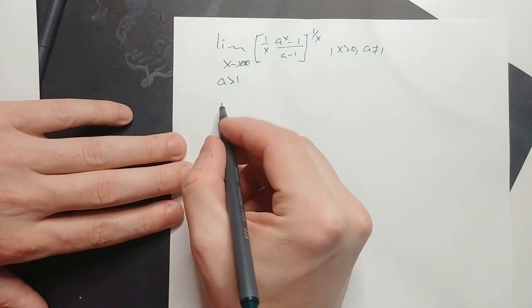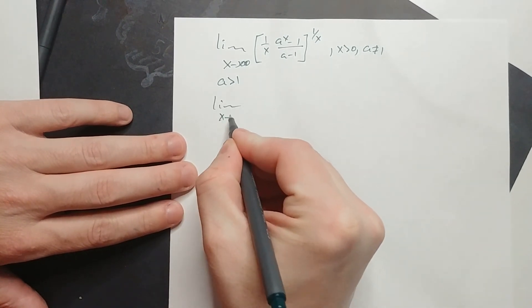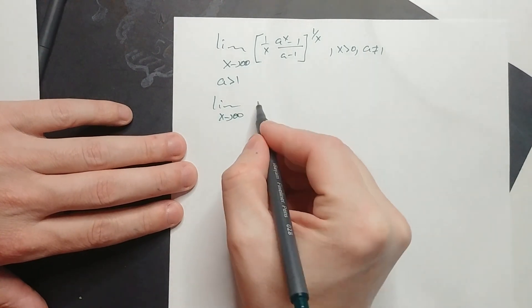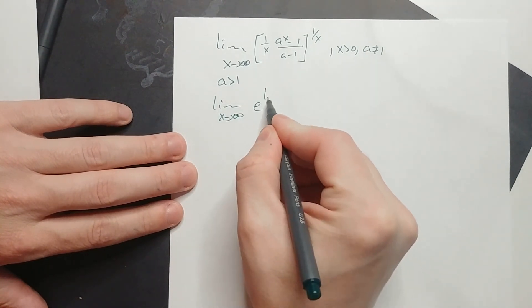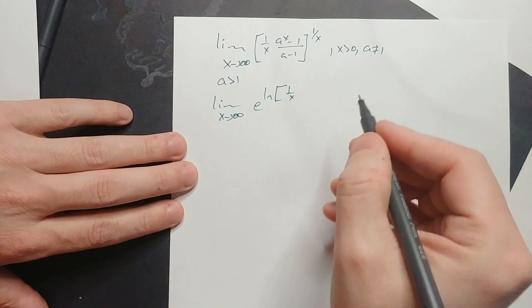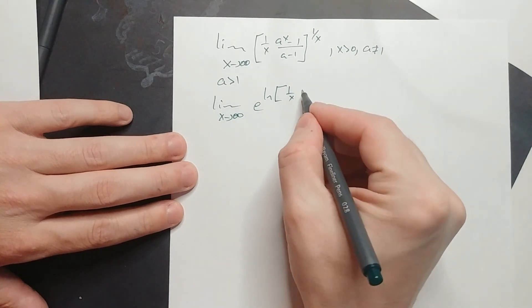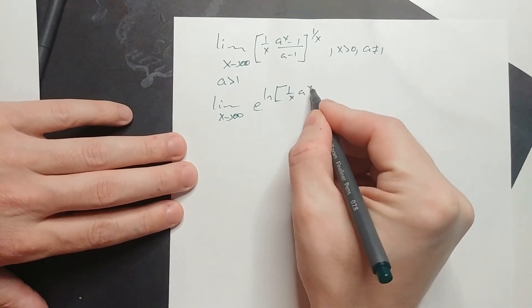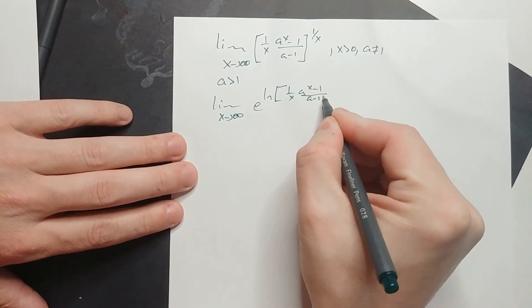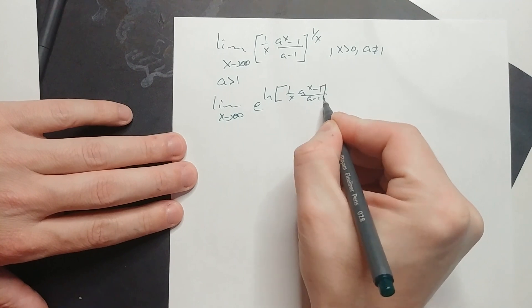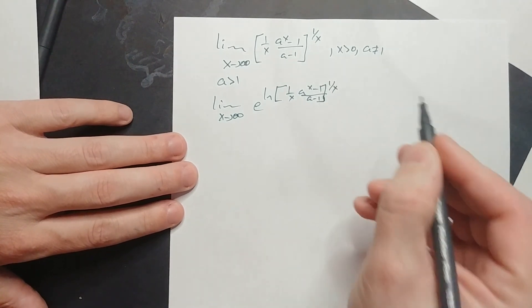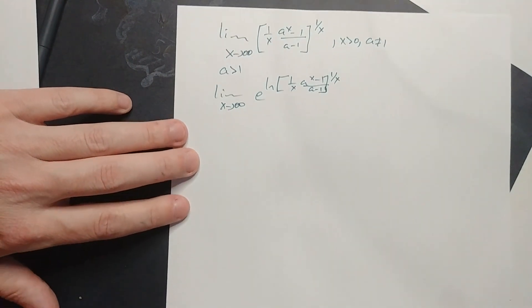We can say the limit as x approaches positive infinity of e to the ln of this expression — 1 over x times (a to the x minus 1 over a minus 1), raised to the 1 over x. That's a legitimate move.